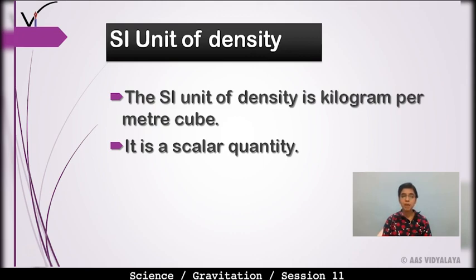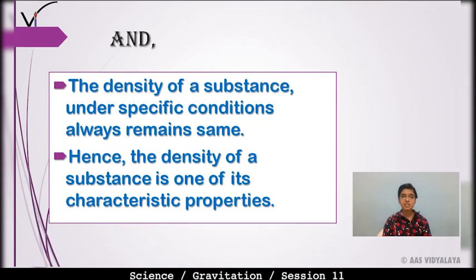Jo density hoti hai woh ek scalar quantity hoti hai — scalar quantity mein koi direction matter nahi karta. And the density of a substance under specific conditions always remains the same. Specific conditions stands for specific conditions of temperature and pressure — yadi temperature and pressure ki conditions specific hain, normal conditions hain, to koi bhi substance ki density hamesha same rahegi.